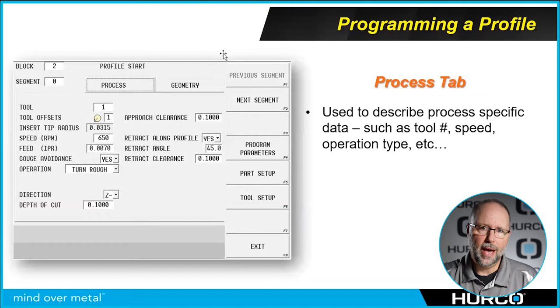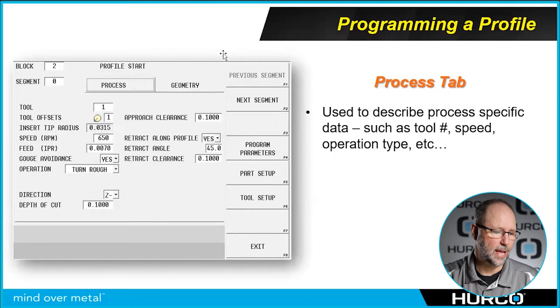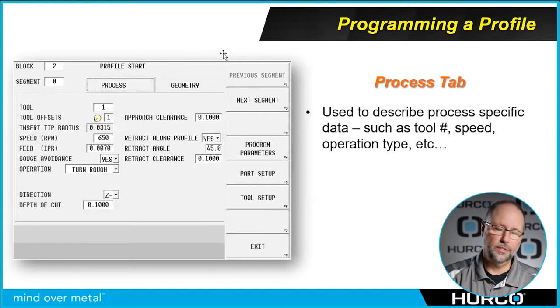Now we're going to get into the actual programming block. Whenever we do a programming block in conversational on our lathe, there are two tabs: the process tab and the geometry tab. On the process tab, that's where we're going to determine what tool we're going to use for cutting this particular feature, what are the speeds and feeds, what's my depth of cut, is this a rough turn or finish turn.